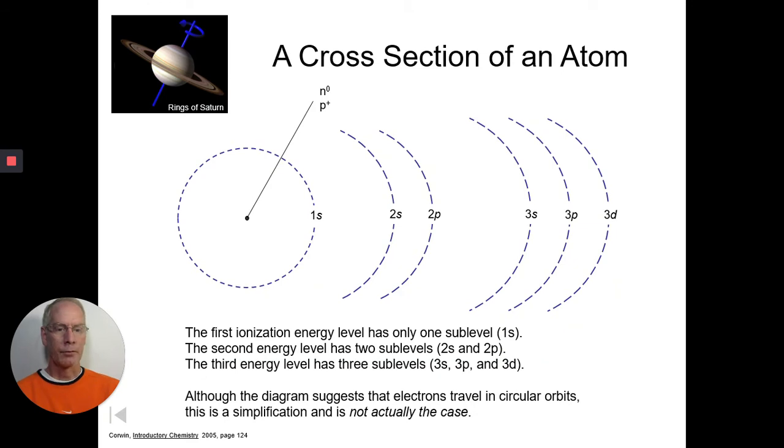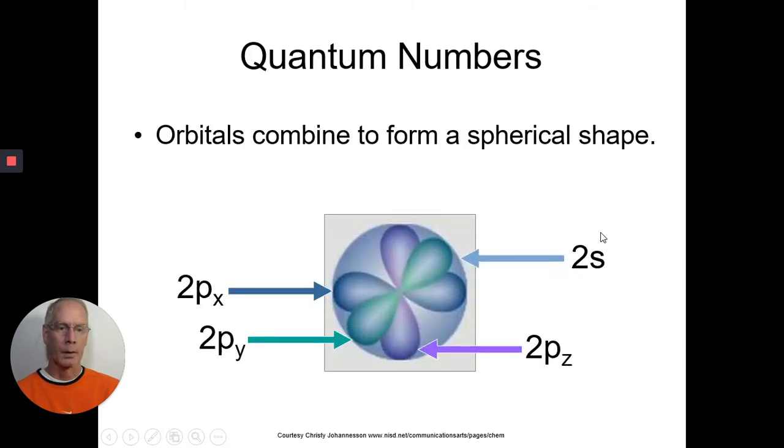And again, this is really a very simplistic model, trying to get what you understand, the Bohr model, and making it a little bit more like the quantum mechanical model. So even from a distance, this might look like a single ring, but when you get closer up, you'll see there's actually two different paths the electrons could go on.